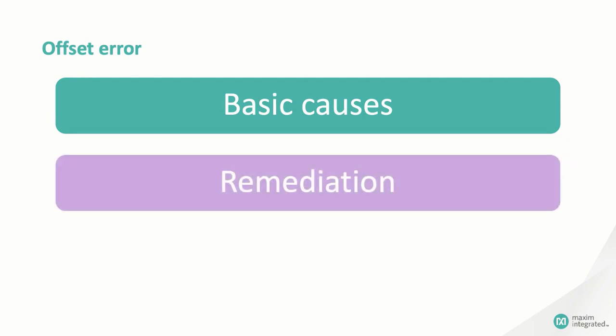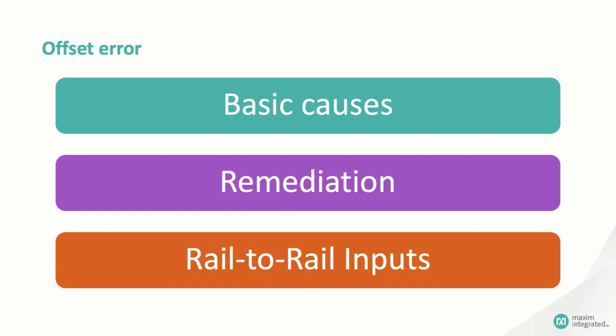Well, let's start with offset error. First, we'll take a look at the root causes of offset error and show you a couple of ways to deal with them. Then we'll take a look at rail-to-rail amplifiers and some of the unique offset issues that they bring with them.